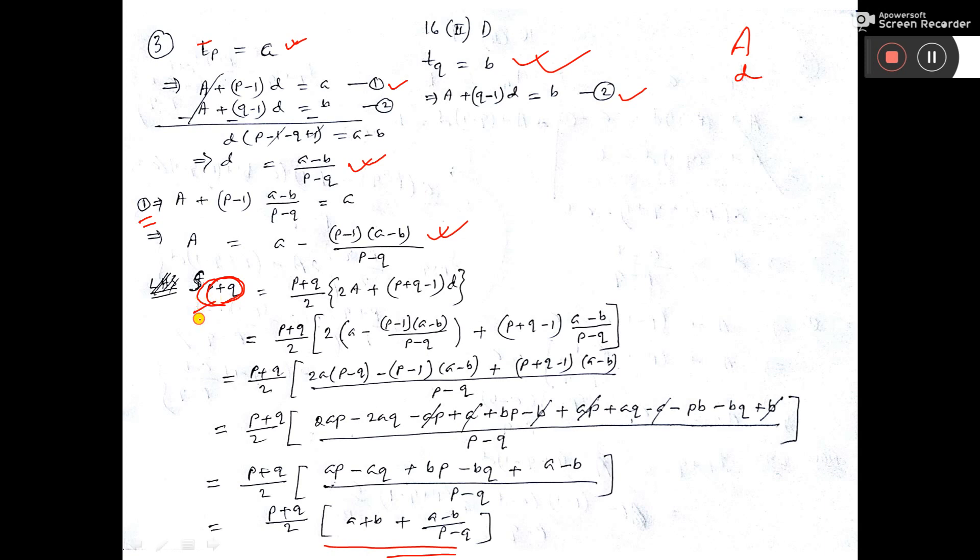So the formula, sum that is equal to n by 2. Sum of p plus qth terms. So n is p plus q. So n by 2 into 2A plus n minus 1 into D.